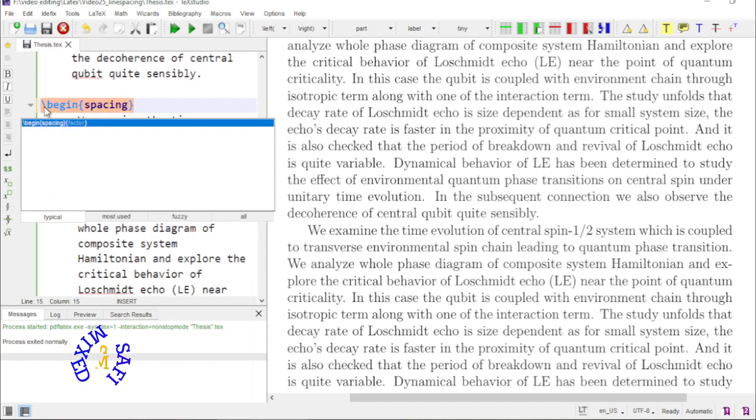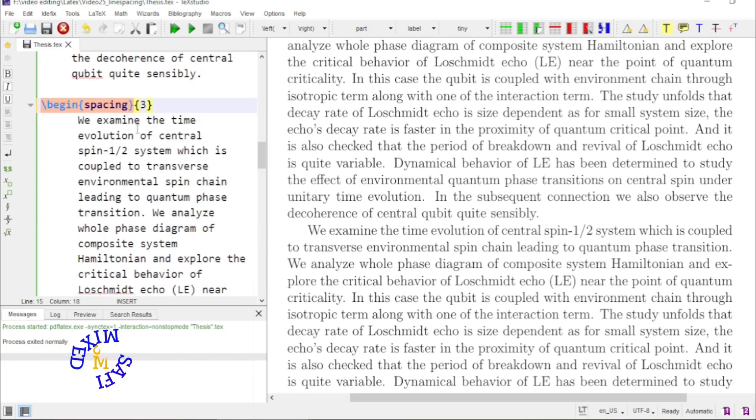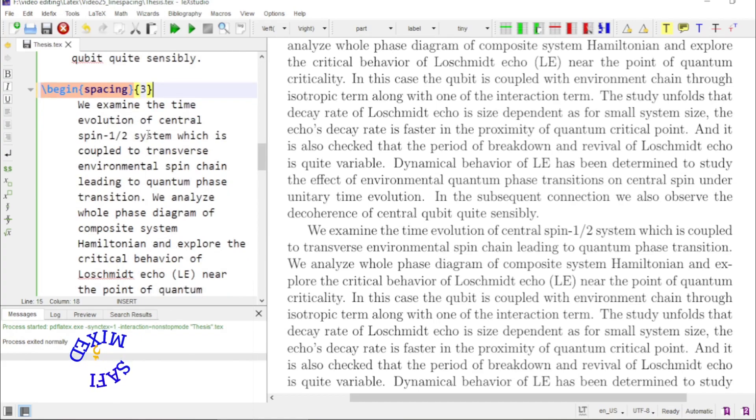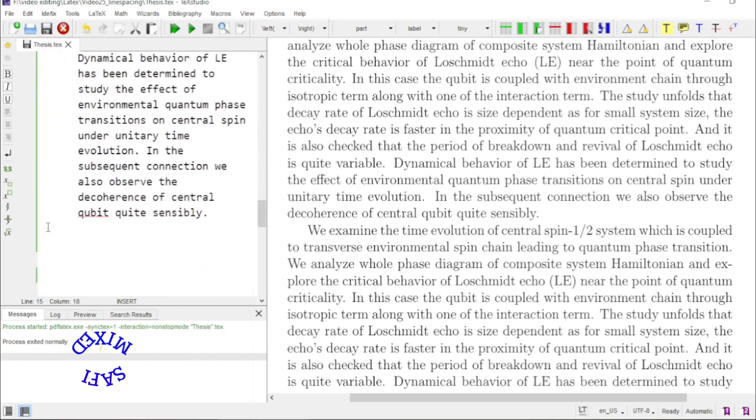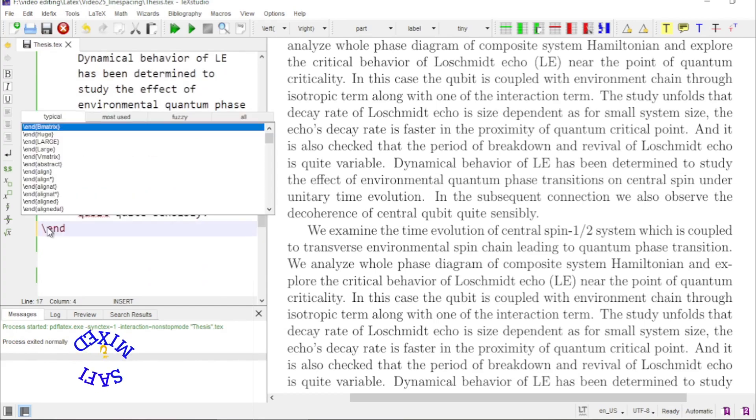And then I add another condition in which I put a number. For example if I put three this three would mean that the space between the lines inside this environment would be three times larger and I end the environment by adding the command end spacing.